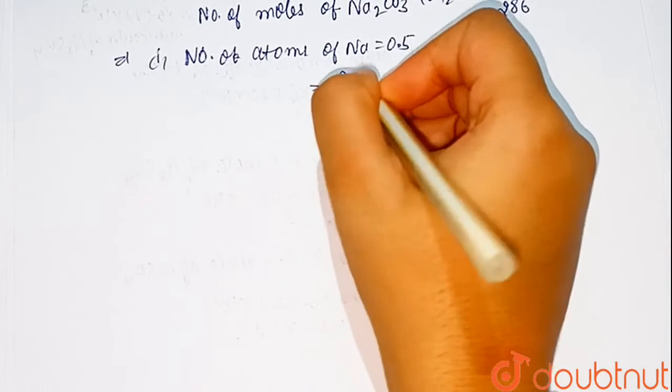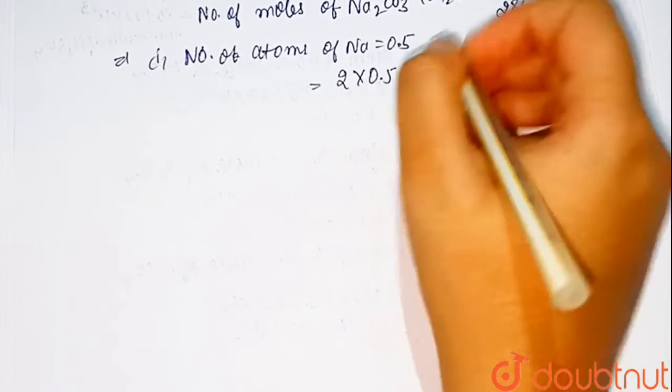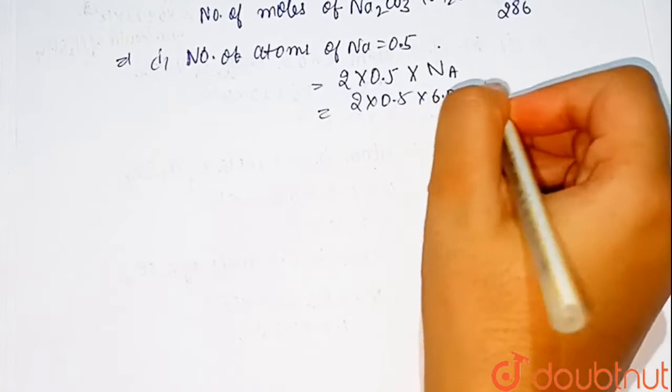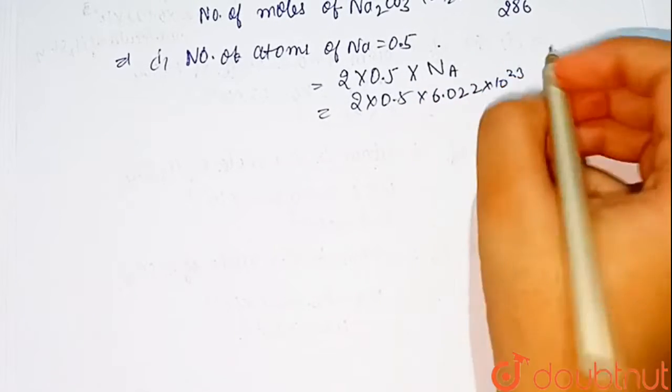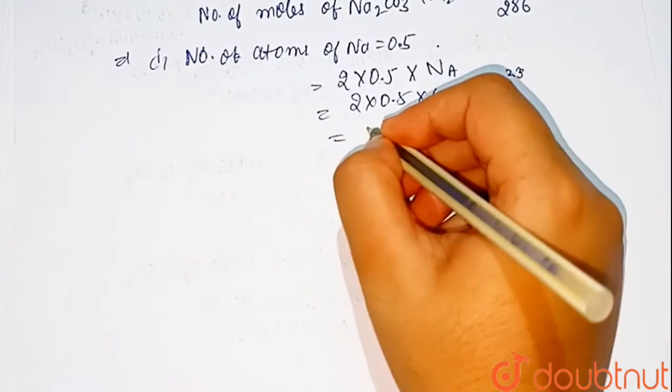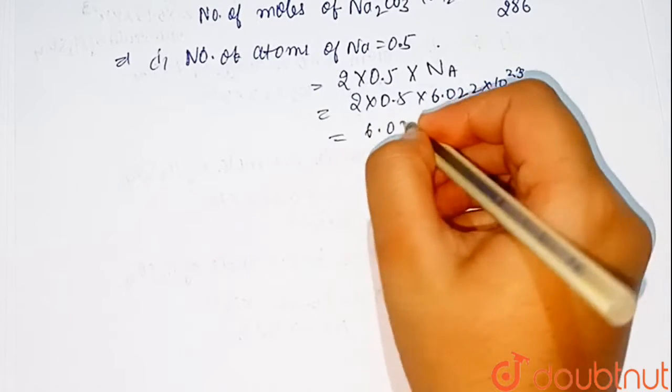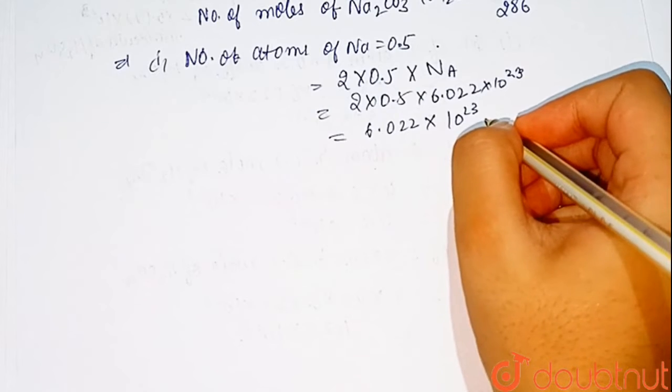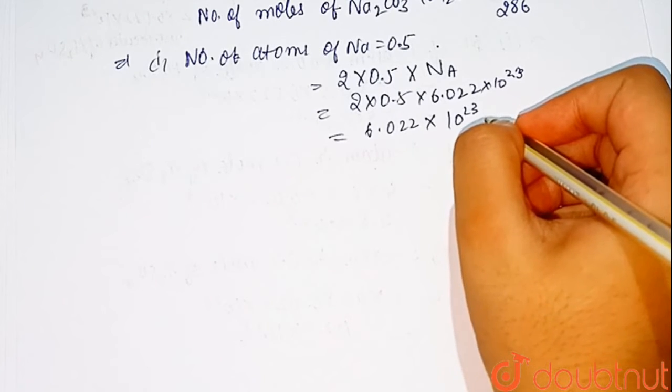So we have to multiply 2 into 0.5 into NA. 2 times 0.5 times 6.022 times 10 raised to power 23 which is equal to 6.022 times 10 raised to power 23 atoms of sodium.